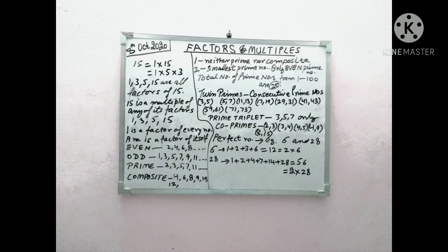Just look on the board now. So as you see on the board, you can see factors and multiples on the left side. Top you see 15 is equal to 1 into 15, which is equal to 1 into 5 into 3. We say that 1, 3, 5, 15, these are all factors of 15. That means any number which can divide a given number will be known as the factor of that given number.